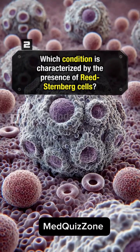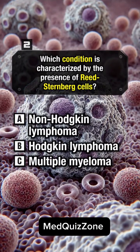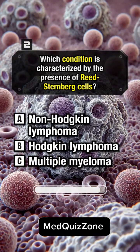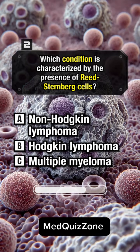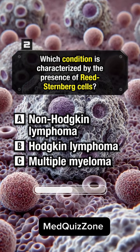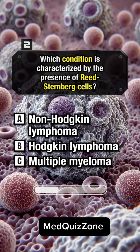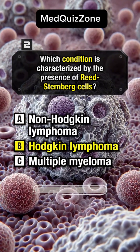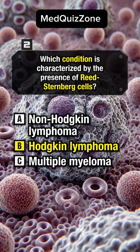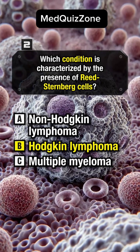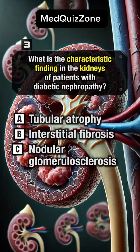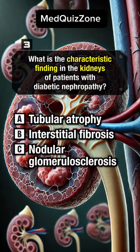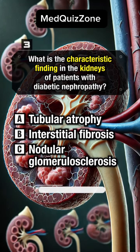Which condition is characterized by the presence of Reed-Sternberg cells? Answer B: Hodgkin lymphoma.